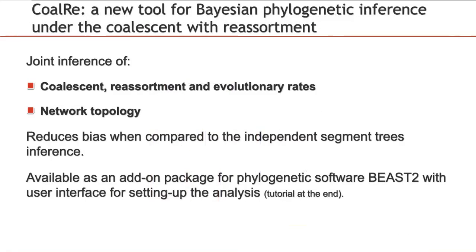This model is implemented in the CoalRe package, which is available as an add-on for phylogenetic software BEAST2. Taking viral sequence alignments as input, it provides the posterior distribution of coalescent, reassortment, and evolutionary rates, as well as network topologies.